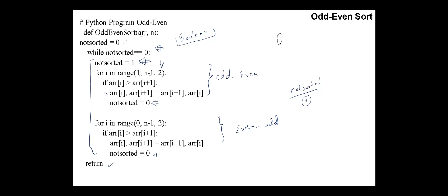Again, the complexity of odd-even sort, in the worst case, is O(n²), where n is the number of elements in the array.